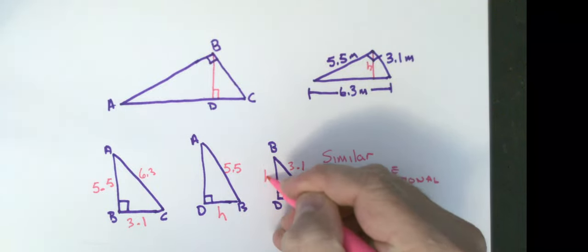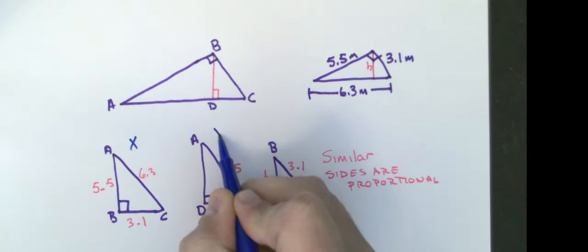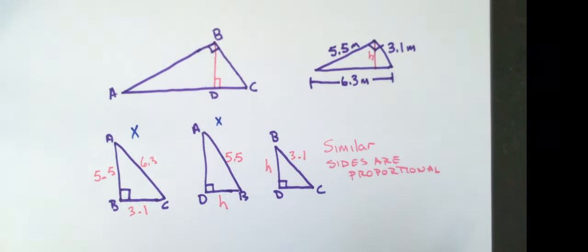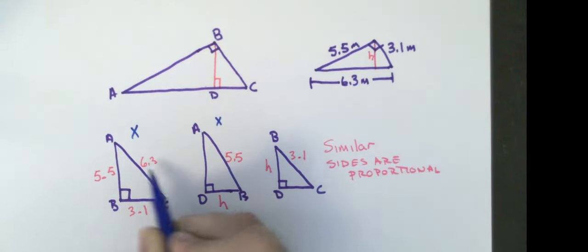So, I can use either one of these two triangles to set up my proportion to solve it. I'm going to use the first one and the second one. I know that bottom over bottom, H over 3.1, is equal to right over right, 5.5 over 6.3.